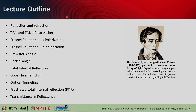Here is the lecture outline. We will discuss briefly what is reflection and refraction. Then we will revise the basics of TE, which is S polarization, and also TM, which is P polarization of light. Then we will derive the Fresnel equations for S and P polarization, and introduce the concepts of Brewster's angle, critical angle, total internal reflection, Goos-Hänchen shift, optical tunneling, and frustrated total internal reflection. Finally, we will calculate transmittance and reflectance.